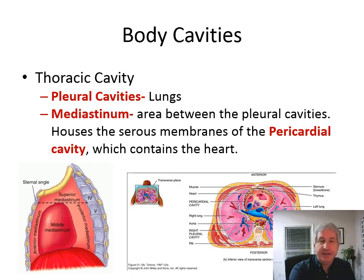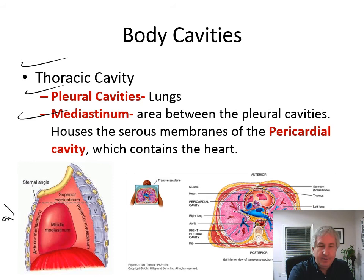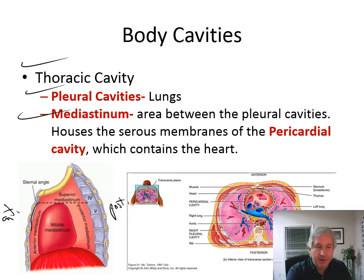Body cavities: the thoracic cavity has the pleural cavities surrounding the lungs, and then the mediastinum — that's the area between the pleural cavities — houses the serous membranes of the pericardial cavity, which contains the heart. The mediastinum is this region through the middle, extending from anterior to posterior. The abdominal pelvic cavity has the abdominal cavity superior to the pelvis, with digestive, lymphatic, and urinary organs, and the pelvic cavity with reproductive organs and some digestive and urinary organs.